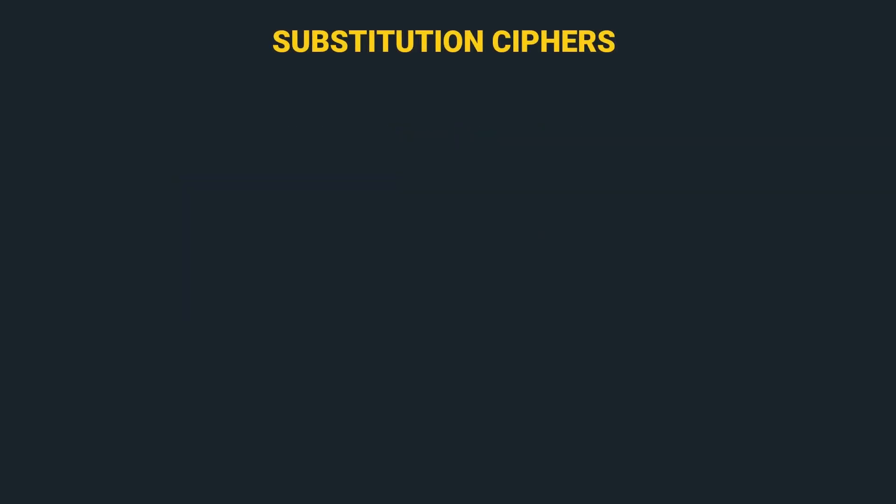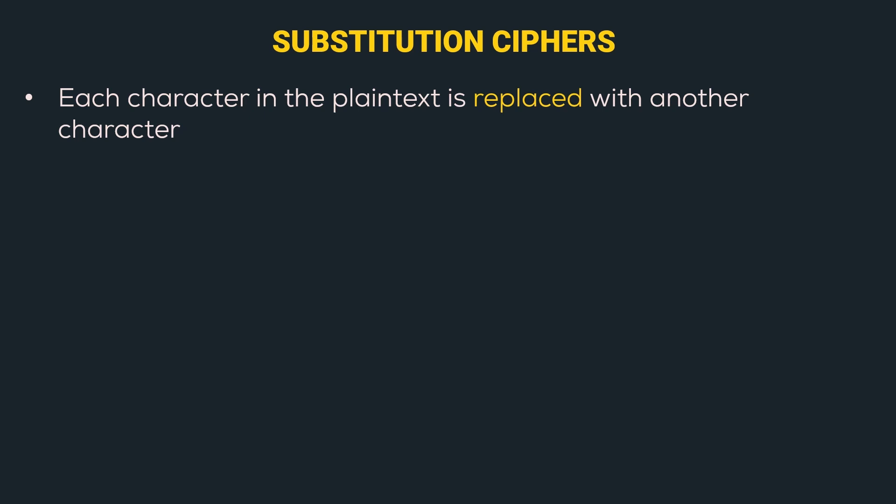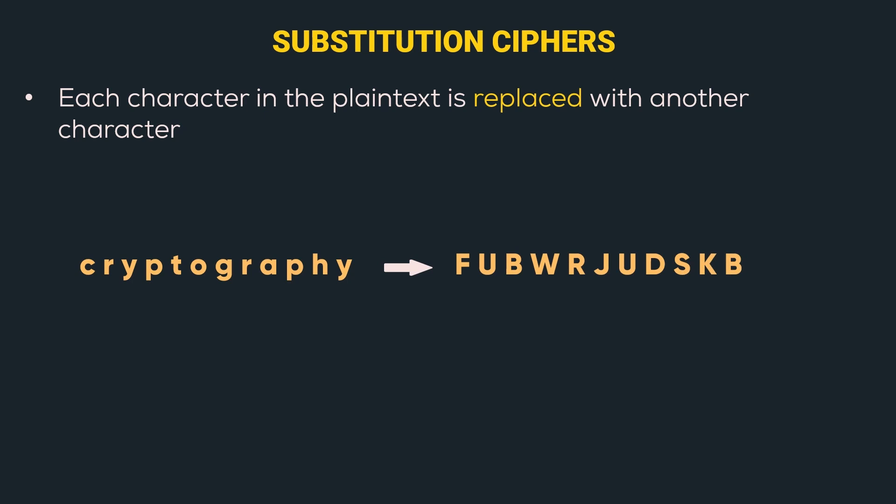So let's dive deep into it. In a substitution cipher, each character in the plaintext is replaced with another character. Let's take an example to understand this. Consider the following plaintext, i.e. 'cryptography', which is converted to the following ciphertext. In cryptography, conventionally, plaintext is represented in lowercase alphabets and ciphertext is represented by uppercase alphabets. So from now on, we will start using this convention.